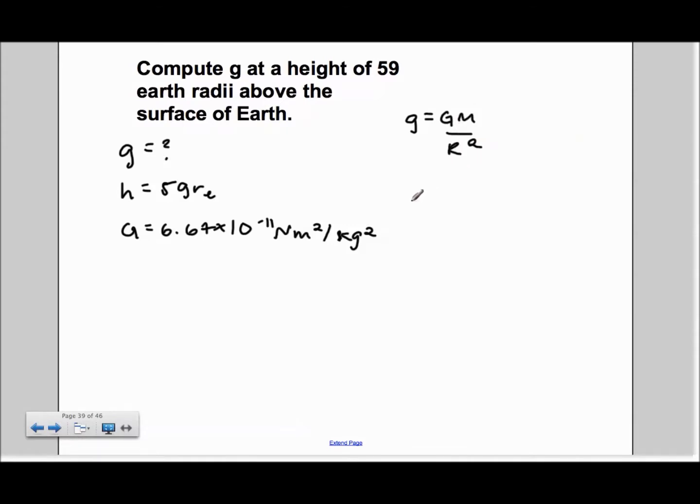We know that R is equal to the height plus the radius of the Earth. And since the height is 59RE, we get an answer of 60RE.